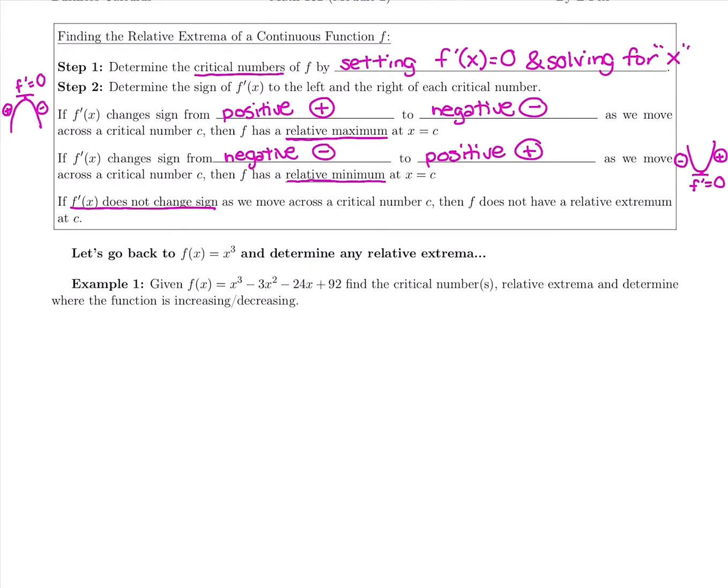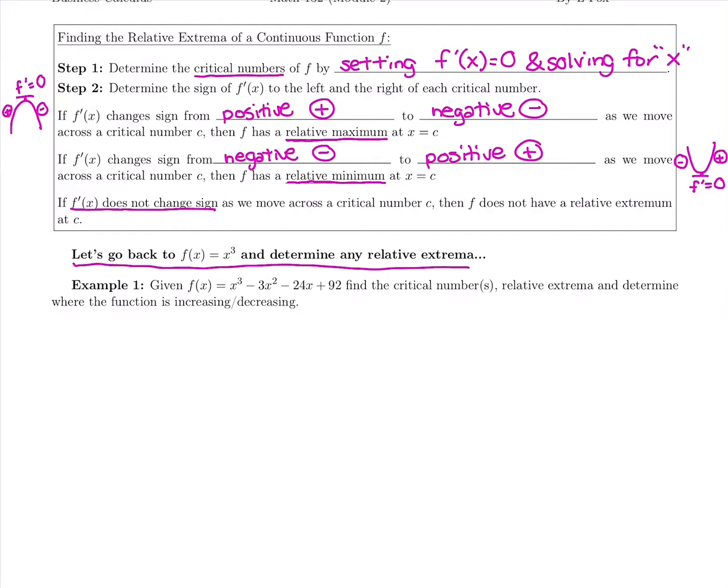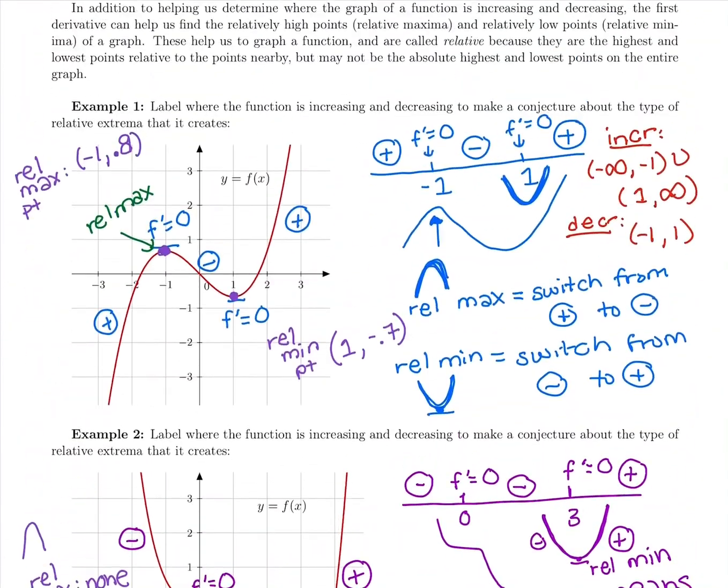So let's go back to our first example, x cubed, and determine any relative extrema and label our critical number in there. Just add in some extra pieces.